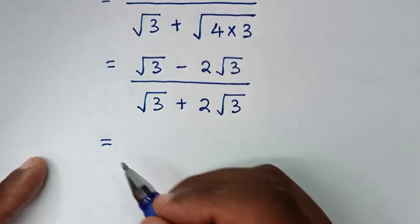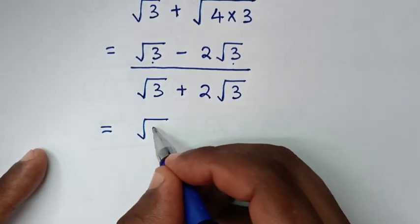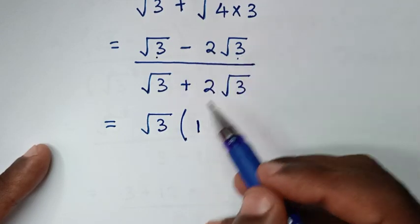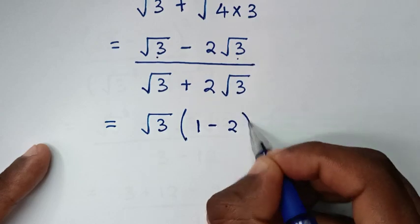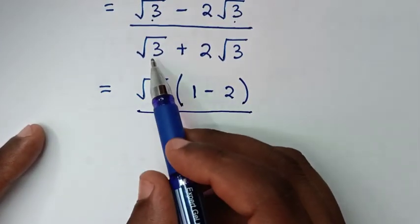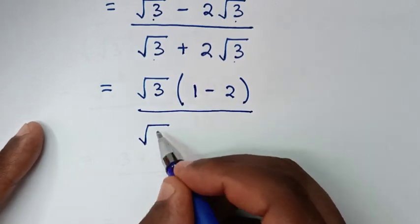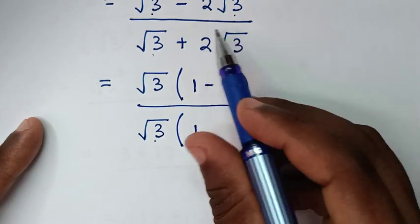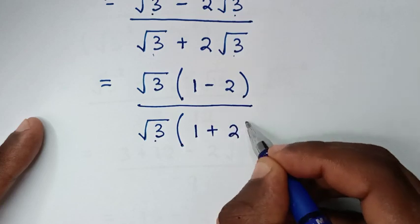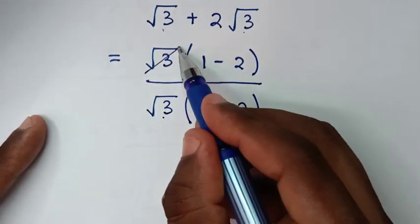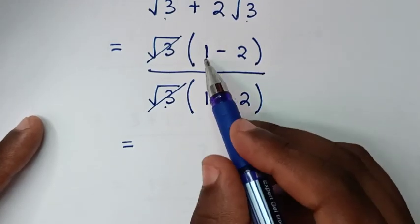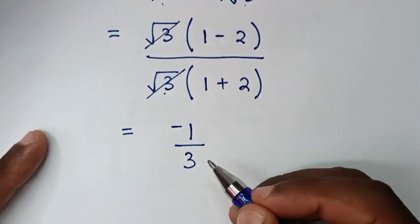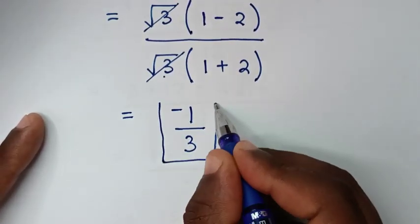In the next step, square root of 3 is a common factor in the numerator, so we factor it out: square root of 3 times (1 minus 2). Similarly in the denominator, square root of 3 is common: square root of 3 times (1 plus 2). The square root of 3 cancels, leaving 1 minus 2 over 1 plus 2, which is negative 1 over 3. This is the same final answer as Method 1.